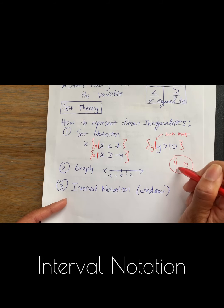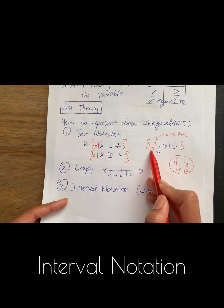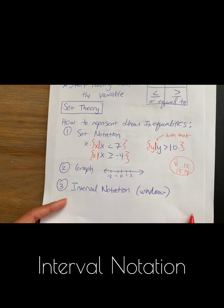So number 11, 12, 13, 14, yada yada. So the set of y such that y is greater than 10, that's how you read it.